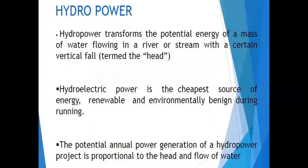As an introduction, hydro power transforms the potential energy of a mass of water flowing in a river or stream with a certain vertical fall. When water flows through the penstock and falls, potential energy is converted to kinetic energy, which is used to rotate the prime mover and generate electricity.